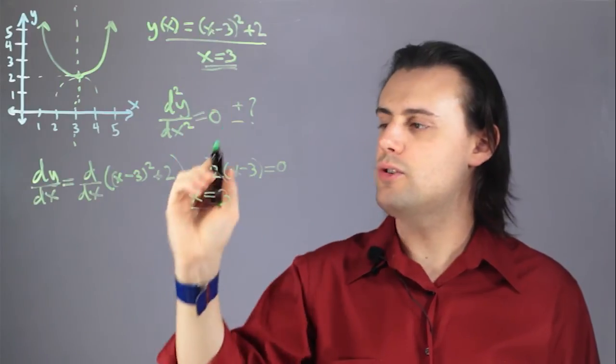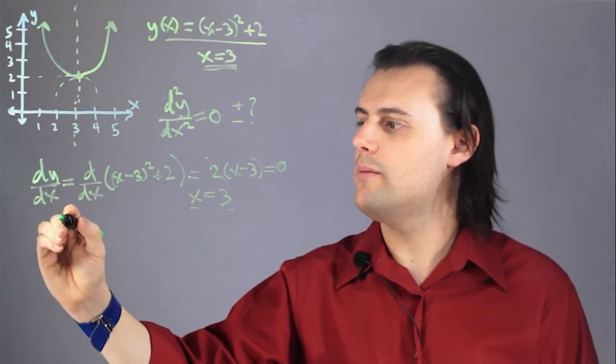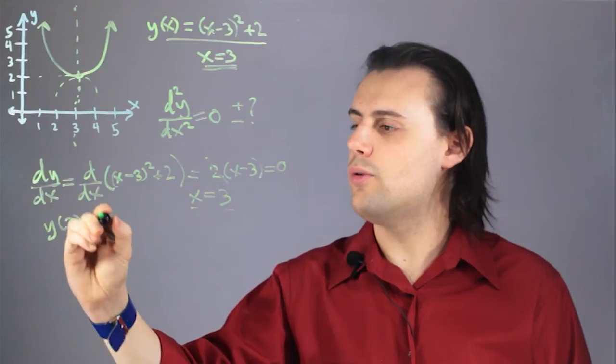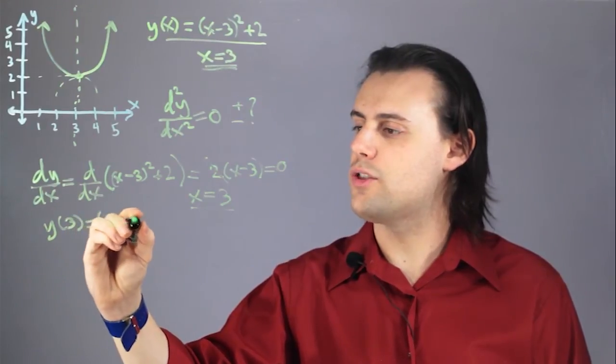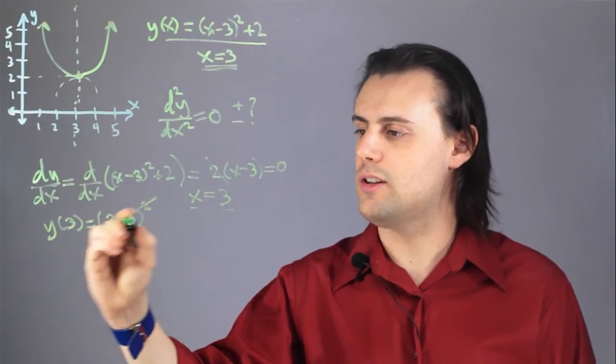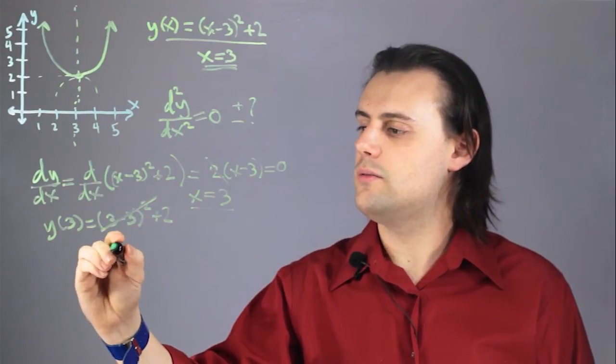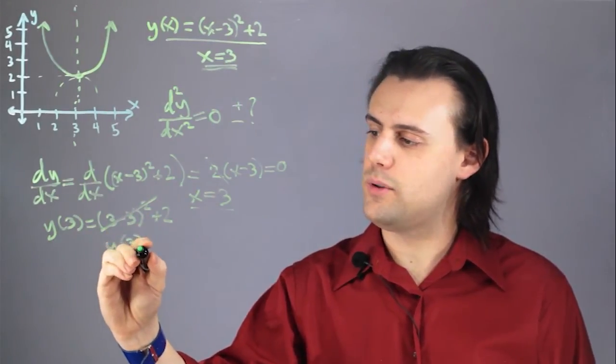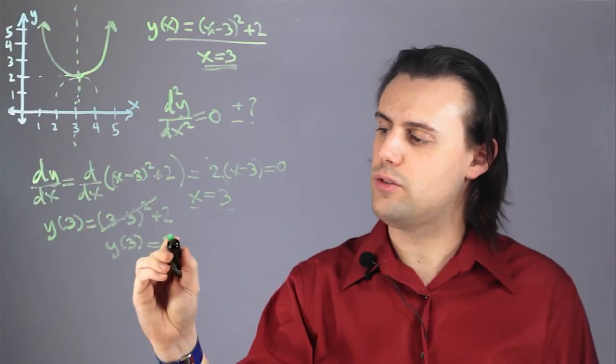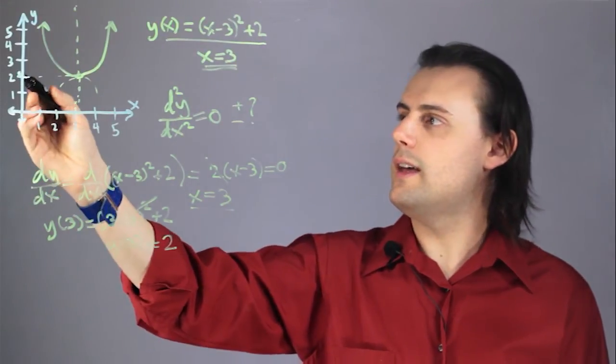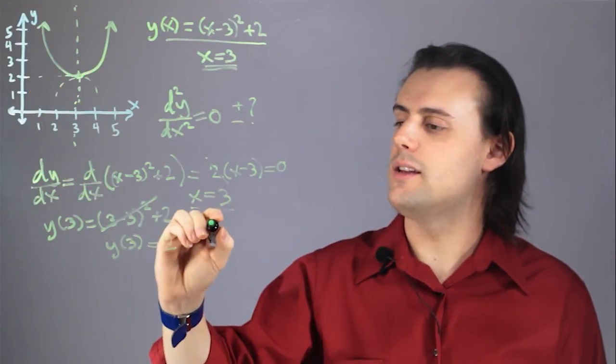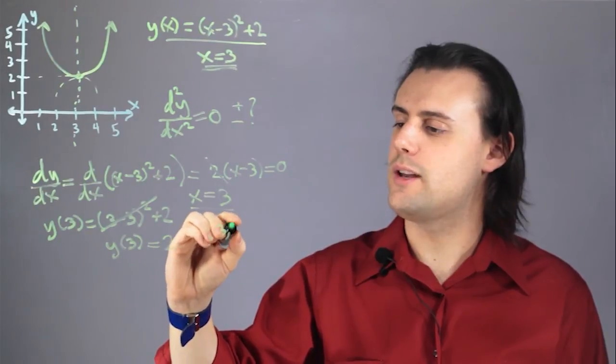If I just plug this into my original equation, I have y of 3 is equal to 3 minus 3 squared, which is just 0, plus 2. So I get y at position 3 is equal to 2, and that's exactly where my vertex lies, at the coordinate 3 comma 2.